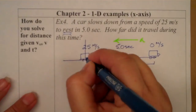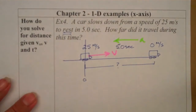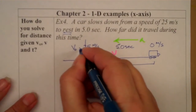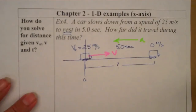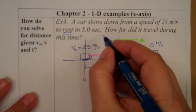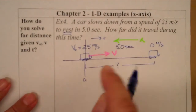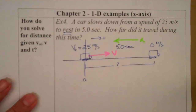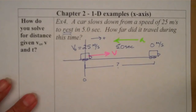We go ahead and put our origin in. We're going to start our clock at this location, and that means our velocity at that location is 25 meters per second. We'll call to the right positive, so we've got positive motion. Our initial velocity is positive 25 meters per second. We'll need to find our acceleration because all three of our equations of motion have acceleration in them.